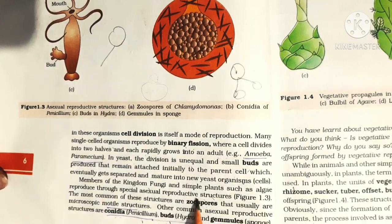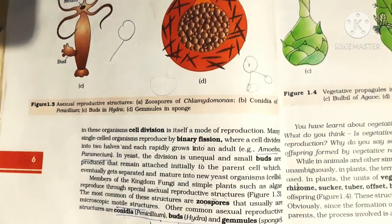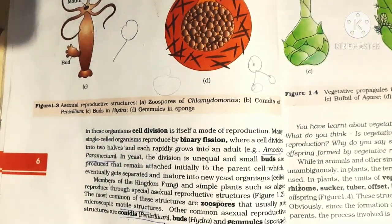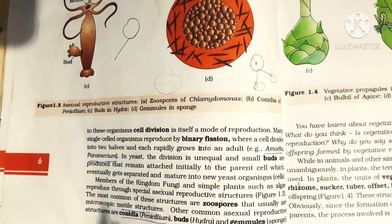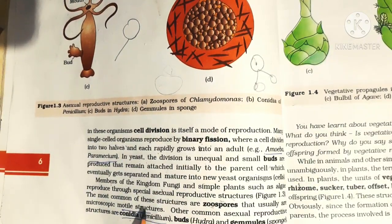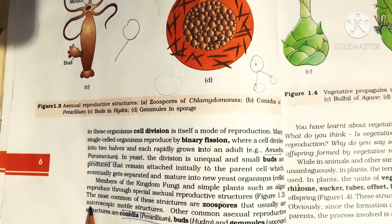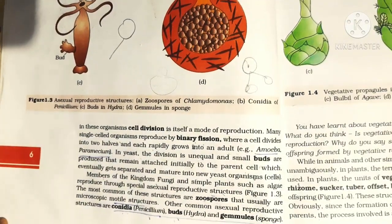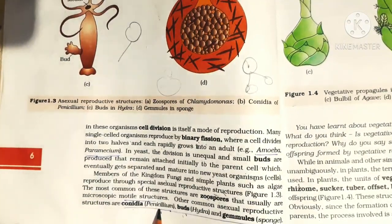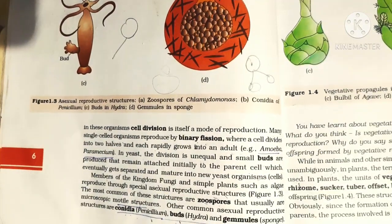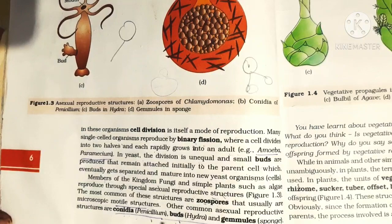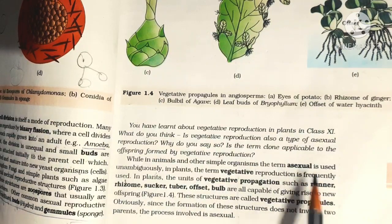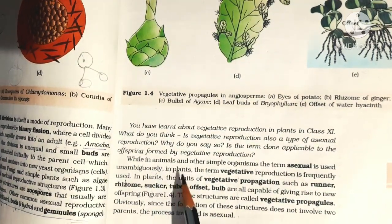Members of the kingdom Fungi and simple plants such as algae reproduce through special asexual reproductive structures called zoospores, which are microscopic and motile. Other common asexual reproductive structures include conidia in Penicillium, buds in Hydra, and gemmules in sponges.